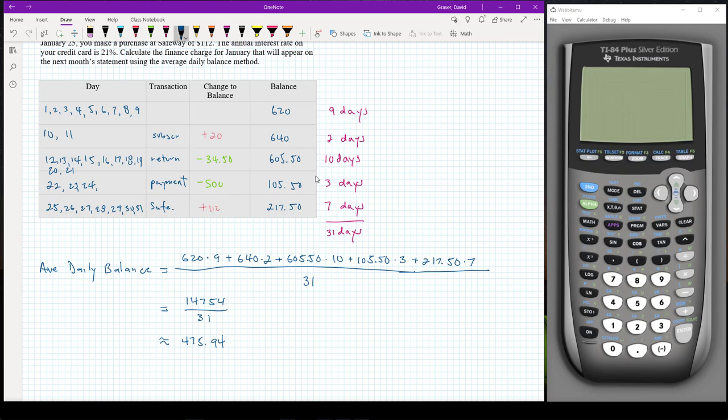But look at these numbers. The lowest one's 105.50, the highest one 640. The average daily balance has to be somewhere in between those two numbers. So if you work out this division and get something that is way bigger than your highest balance or way lower than your lowest balance, you know you've made some kind of a mistake.